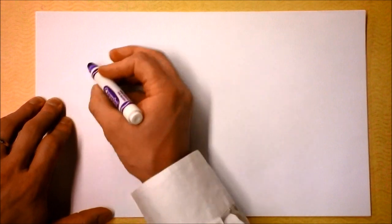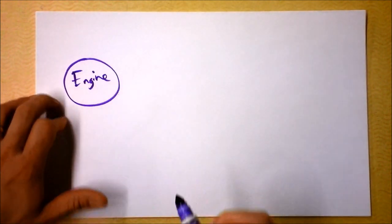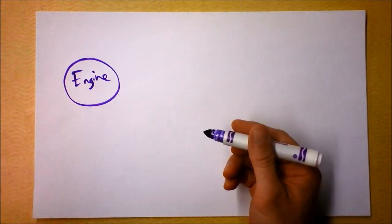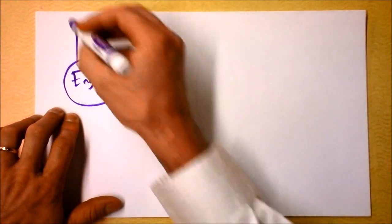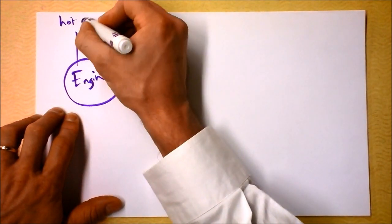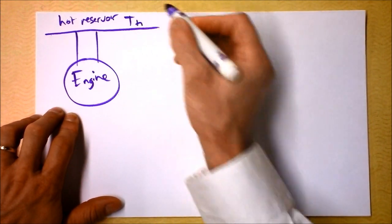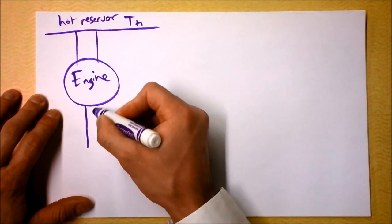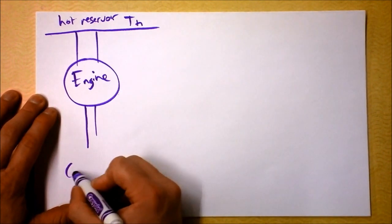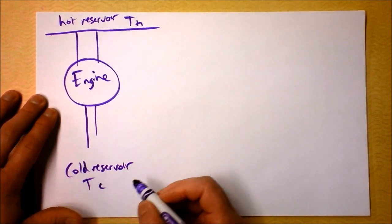Heat engines and not heat engines. For a heat engine, this is going to be a schematic of four different types of things. There's the heat engine, and it's got a hot reservoir here at some temperature T hot, as we've seen before. The heat engine is dumping heat into a cold reservoir at some temperature T cold.